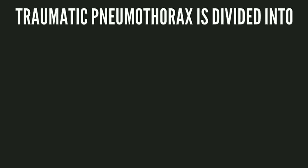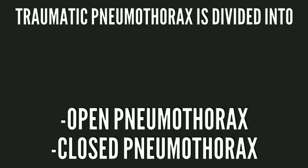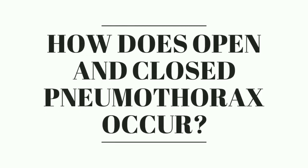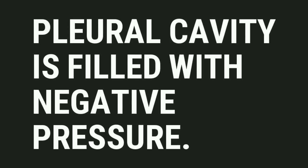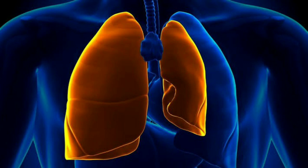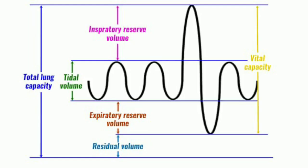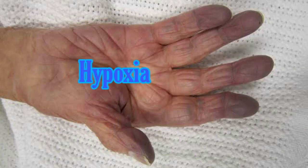Traumatic pneumothorax is further classified into open and closed types. Open pneumothorax results when atmospheric air, which is at positive pressure, flows directly into the pleural cavity, which is at negative pressure. As the air pressure in the pleural cavity becomes positive, the lung will start to collapse on the affected side. This collapse leads to a decrease in total lung capacity, which is the volume of air in the lung after maximum inspiration, and the person will develop ventilation-perfusion imbalance leading to hypoxia.